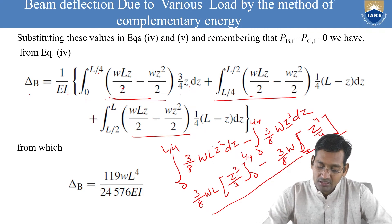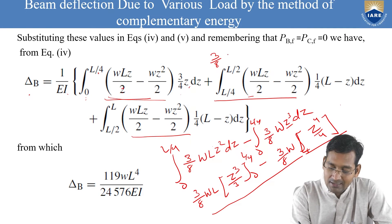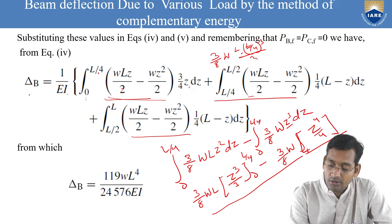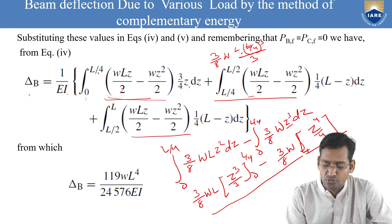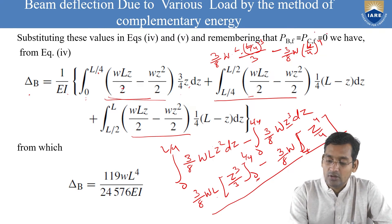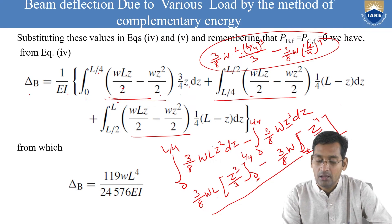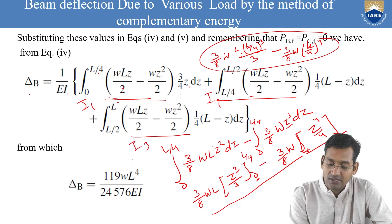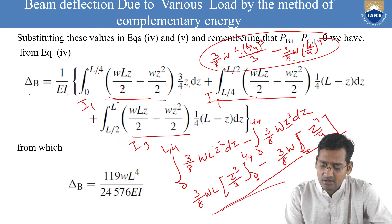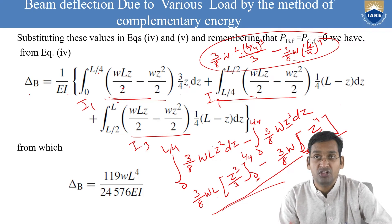When simplifying, take care with powers — for example L/4 cubed means (L/4)³. Use proper brackets to avoid sign errors. You can use a calculator to simplify, but the final answer should appear as a coefficient times WL⁴/(EI). If using a calculator, verify the decimal approximation matches the analytical result to at least two significant digits.